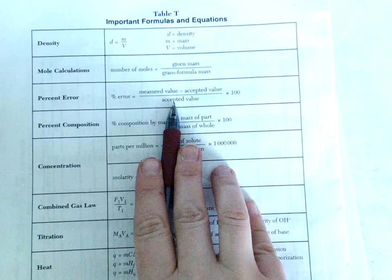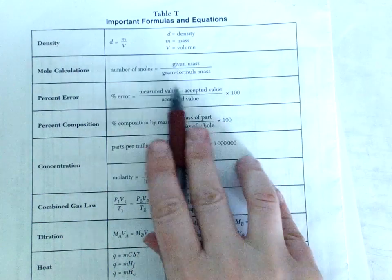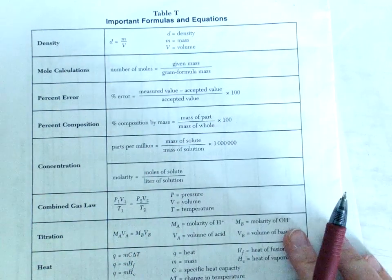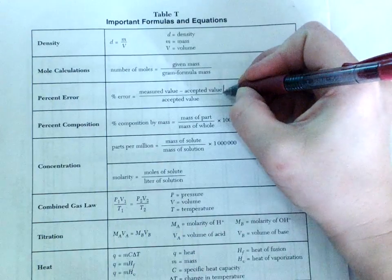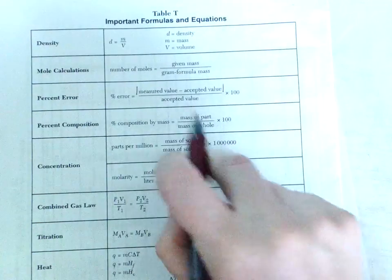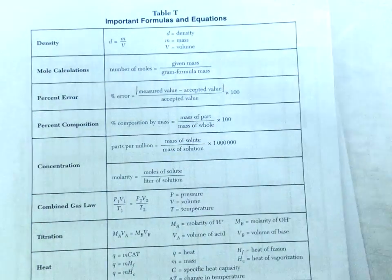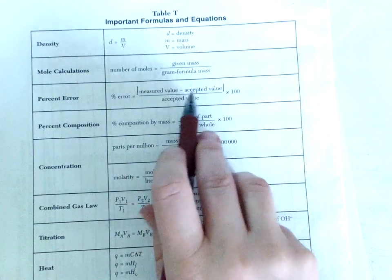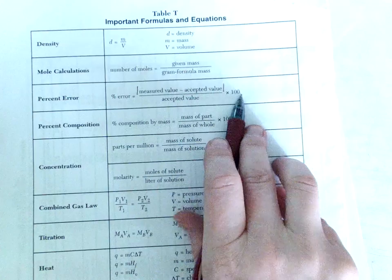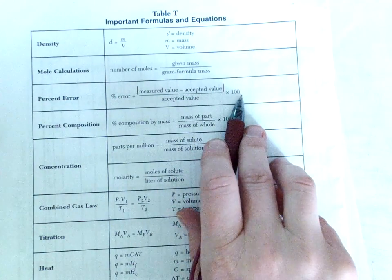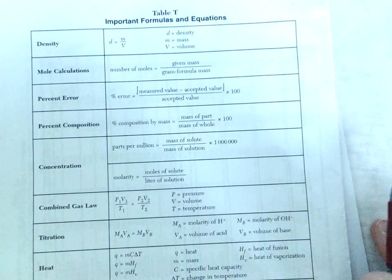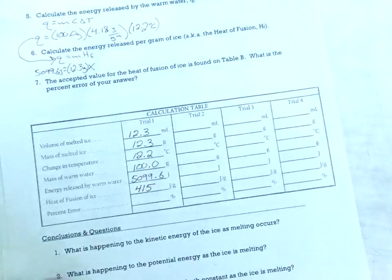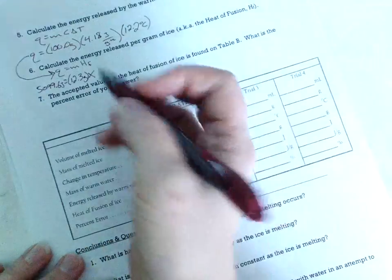Measured value minus accepted value divided by accepted value times 100. If this is negative, just make it positive. In fact, I like to put absolute value signs on that to really drive that point home. So I'm going to do my answer minus the 334. Then I'm going to divide by 334. Then I'm going to times 100 because it's a percent. And I'll see how far away from the right answer I was as a percentage. My math here looks like this.